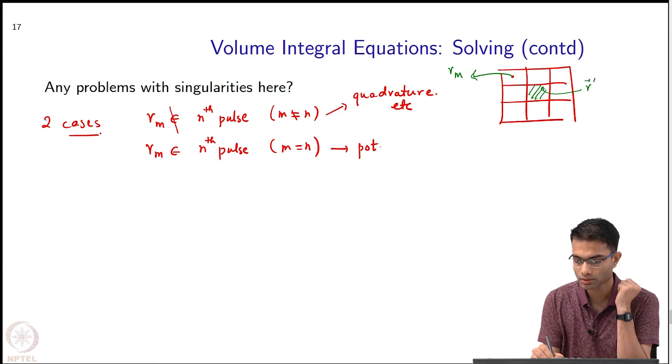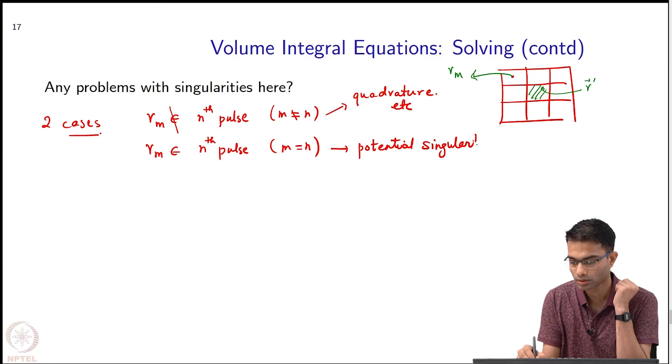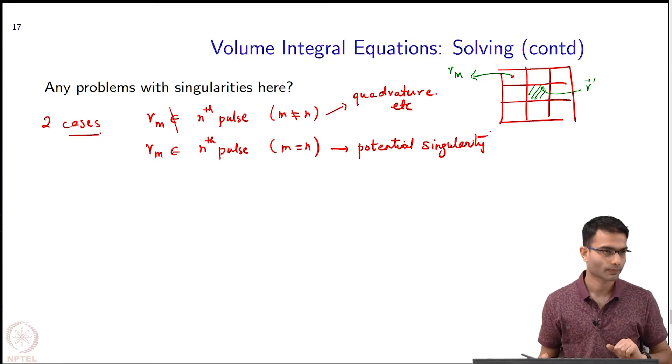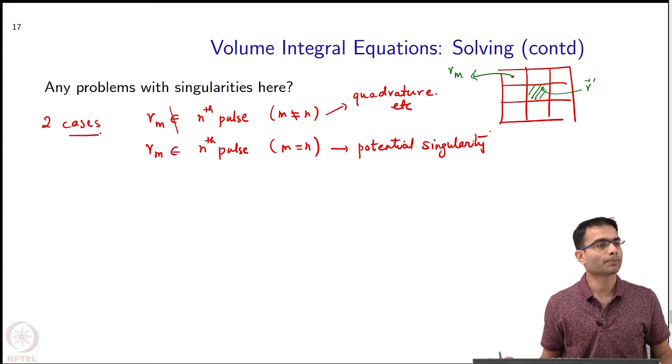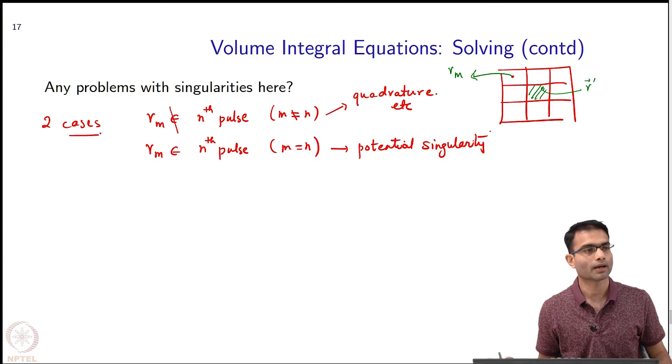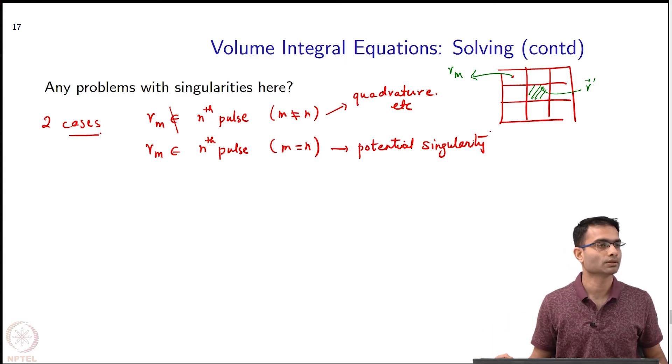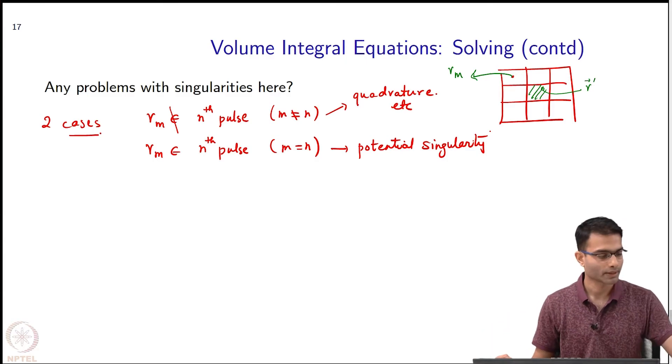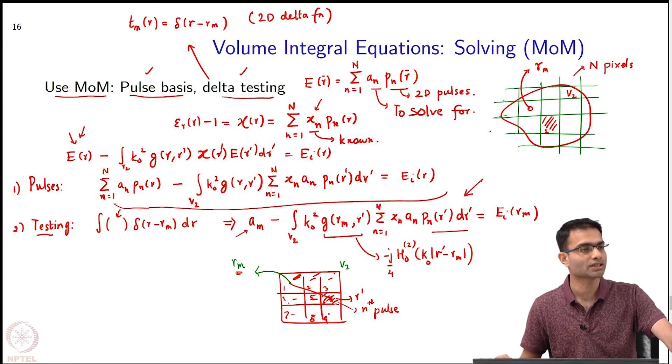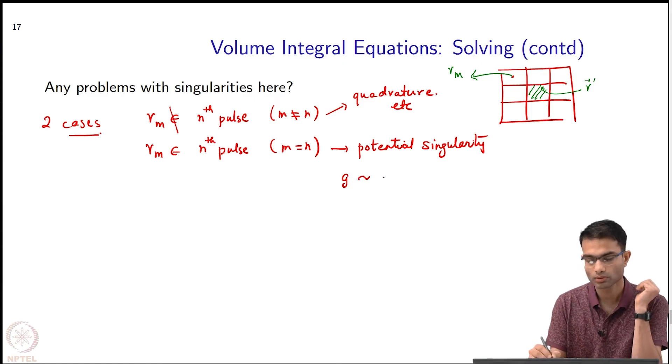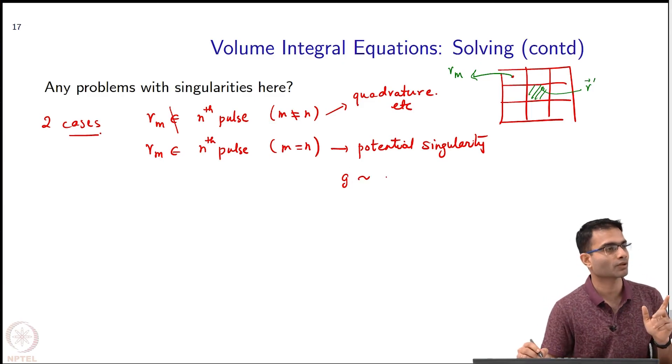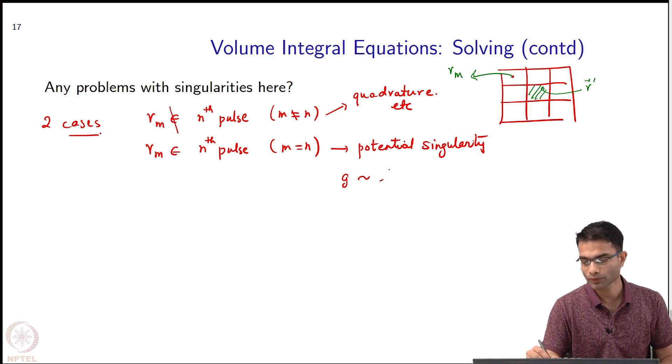The second term is where there is a potential singularity - 'potential' is the keyword over here. Intuitively, do you think this will be a problem? What am I integrating - G or grad G? This integrand over here, am I integrating G or grad G? G, right. And G is of the form, for very small x, of what form? 1 by x or log x.